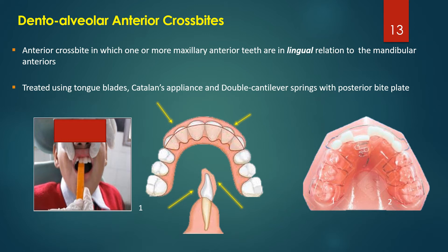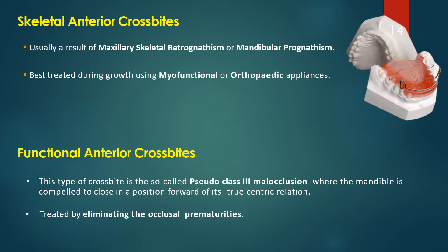Skeletal anterior crossbites usually result from maxillary skeletal retrognathism or mandibular prognathism, and can be treated using myofunctional or orthopedic appliances, which will be covered in subsequent lectures. Functional anterior crossbites occur when the mandible is compelled to close in a position forward to its true centric relation — also called pseudo-Class III malocclusion — and are treated by eliminating occlusal prematurities.